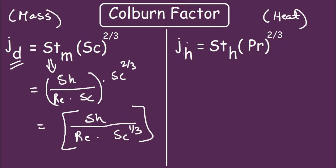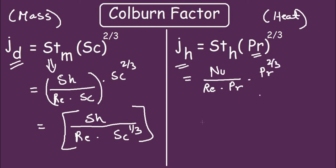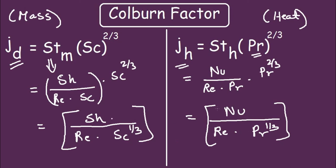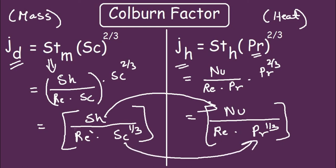The Colburn factor for heat is represented by j_H. It equals Stanton number for heat times Prandtl number to the power 2/3. Expanding, this becomes Nusselt number divided by Reynolds number times Prandtl number, multiplied by Pr to the power 2/3, which simplifies to Nusselt number divided by Reynolds number times Prandtl number to the power 1/3. These expressions are completely analogous: Sherwood replaces Nusselt and Schmidt replaces Prandtl.